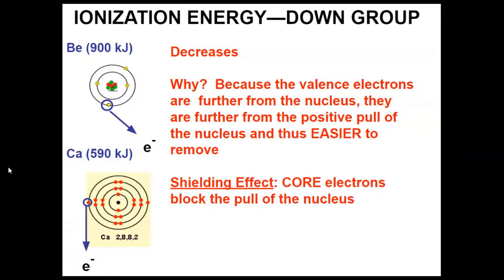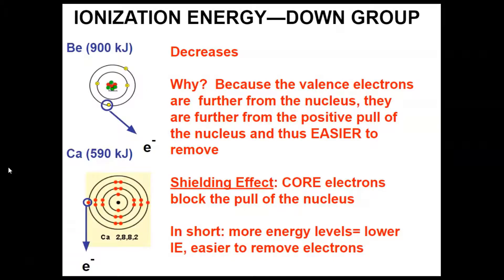We also have something called the shielding effect. The core electrons — electrons in the inner energy levels, not valence electrons — are actually blocking the pull of the nucleus. Calcium has four total occupied energy levels, so the three inner levels are all shielding the nucleus from pulling on its outer electrons. In beryllium, we only have two occupied energy levels, so there's only one core level blocking the nucleus. The more energy levels there are, the lower the ionization energy, and so it's easier to remove electrons.